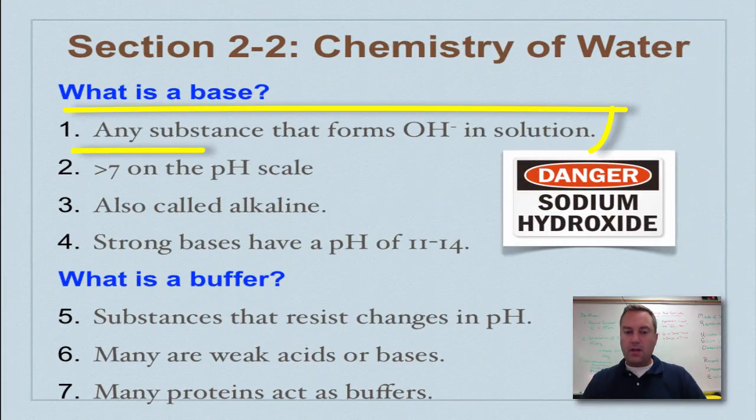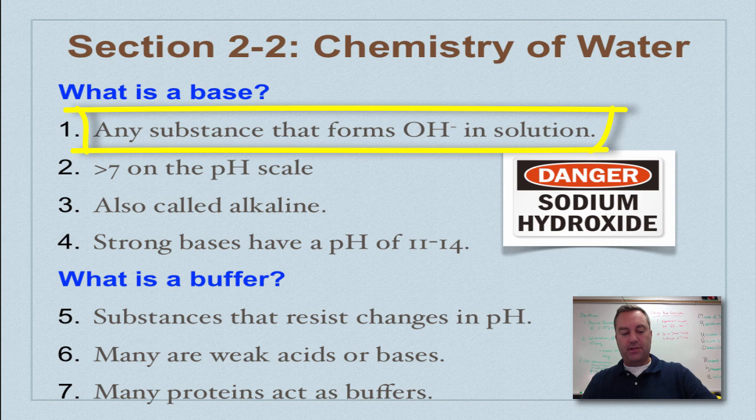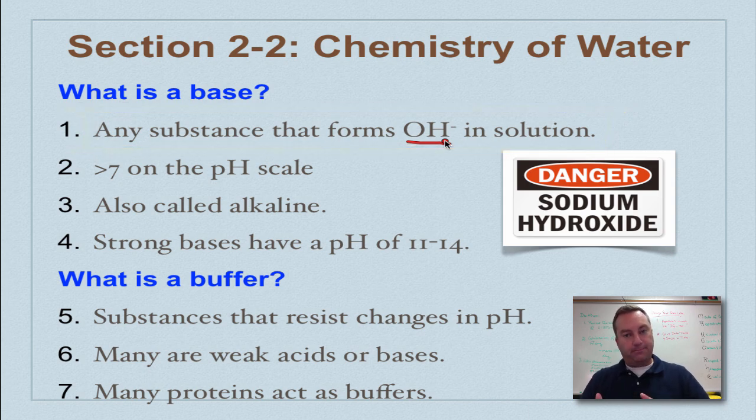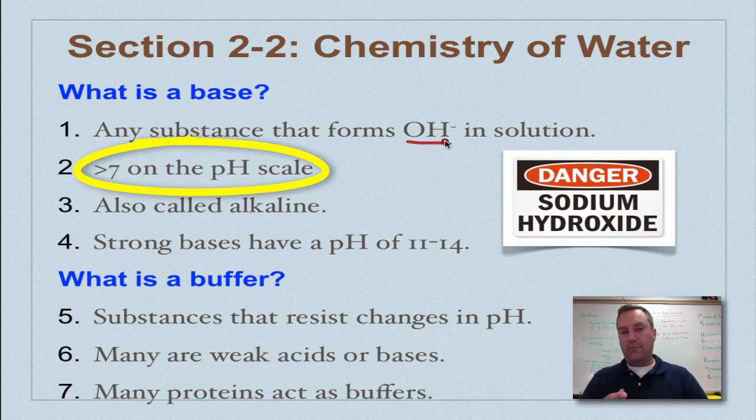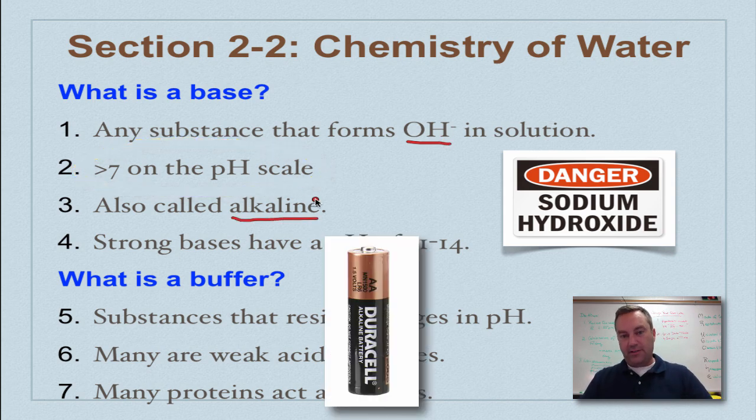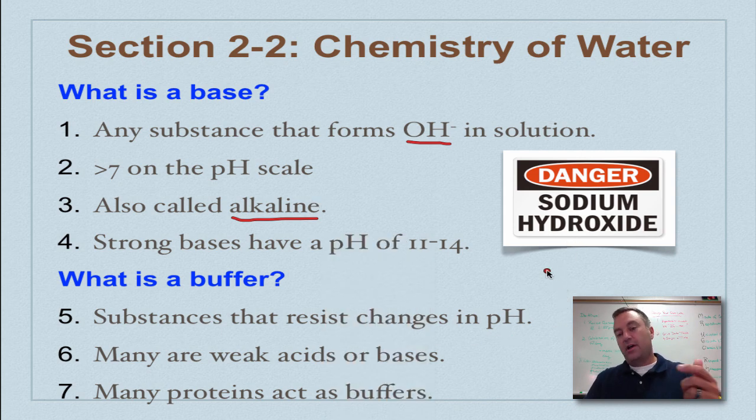Let's learn about bases. A base is any substance that forms the hydroxide ion in a solution. Remember, that's the OH, and that's the negative. On the pH scale, a base has a number above seven. Now, sometimes they're also called alkaline. Remember alkaline batteries, the solution that's going to be found inside an alkaline battery is going to be a basic solution, which we'll also call alkaline. And sodium hydroxide is one of the strongest bases that we have out there. It's also one of the primary ingredients in Drano, which is a drain cleaner.